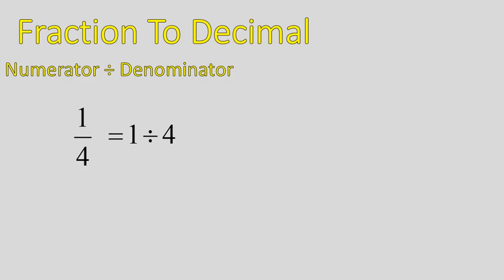On to our next topic, fraction to decimal. If you want to convert a fraction into a decimal, you simply take the numerator divided by the denominator. That's the top number divided by the bottom number, so one-fourth would be one divided by four.